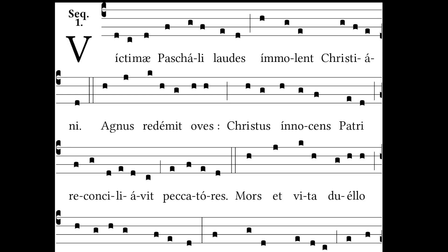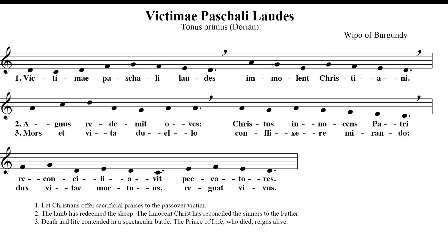Here's the same example in modern notation. [Singing] Victimae Paschali Laudes, Immolent Christiani. In the letters of the musical alphabet: D, C, D, F, G, F, E, D — A, G, E, G, F, E, D. Maybe a little bit slower: D, C, D, F, G, F, E, D — A, G, E, G, F, E, D.